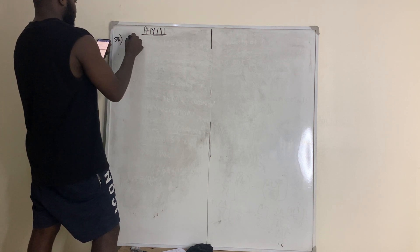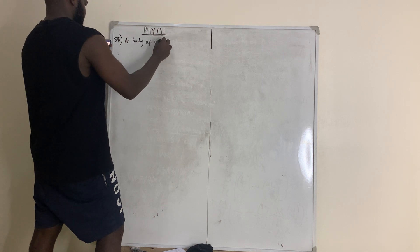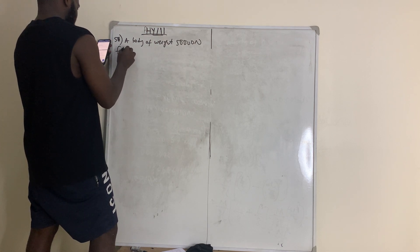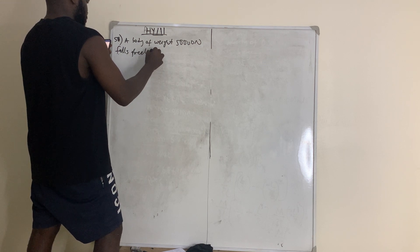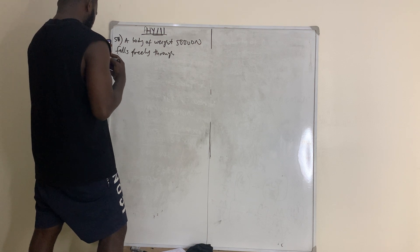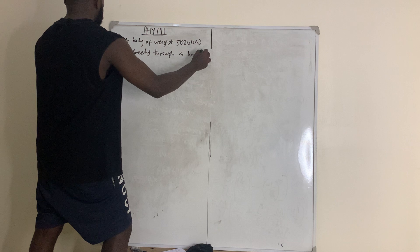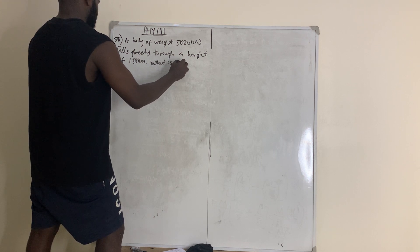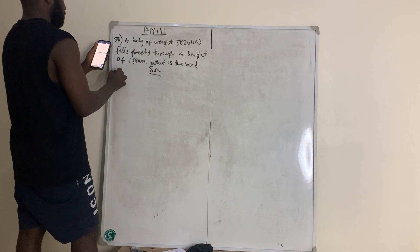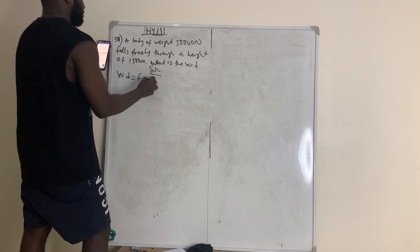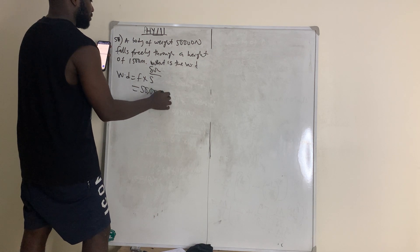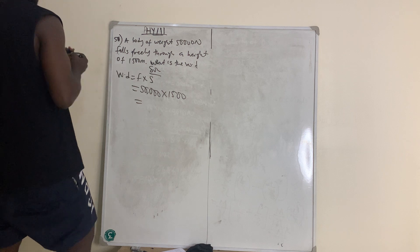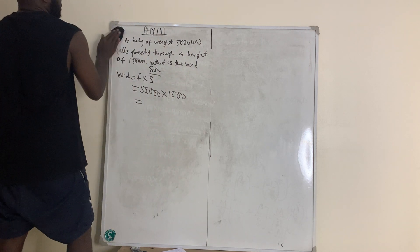Question number 58: A body of weight 50,000 newtons falls freely through a height of 1500 meters. What is the work done? Solution: Work done = Force × distance = 50,000 × 1500. Use your calculator to multiply the two values to get the result.